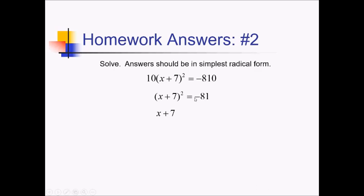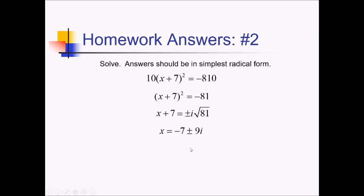But since this is a negative inside, I can take that out right away as an i, so I'll write plus or minus i radical 81. And now to get x by itself, I have to subtract 7. So we're going to have x equals negative 7 plus or minus, and now I can square root 81 to get 9i.